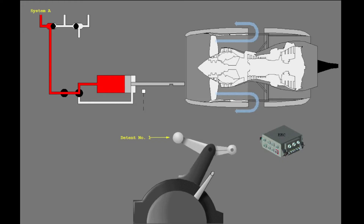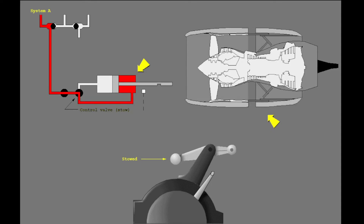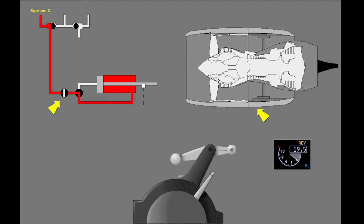Now lower the reverse thrust levers to the stowed position. The control valve moves to the stowed position. The green reverser indication changes to amber and shows the sleeves are in transit. After the sleeves are stowed, the isolation valve closes, the electromechanical lock engages, and the thrust reverser indication extinguishes.